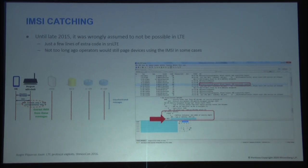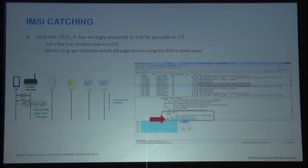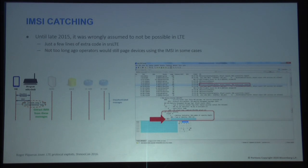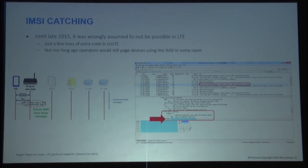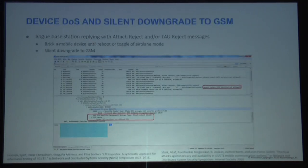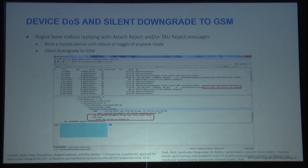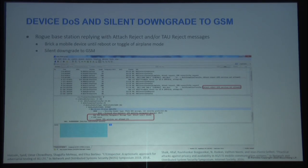Not too long ago, operators were still paging devices with the IMSI — if they didn't get a response because you had no signal, they'd try again using your IMSI, which was definitely not a good idea. That doesn't happen anymore. Other things you could do: brick devices or what I call a silent downgrade to GSM. By abusing the attach reject or tracking area update reject message — which is unauthenticated — you could fool a device to believe it's not allowed to connect to LTE and has to connect to GSM. The phone implicitly trusts it's the operator telling it to do that.